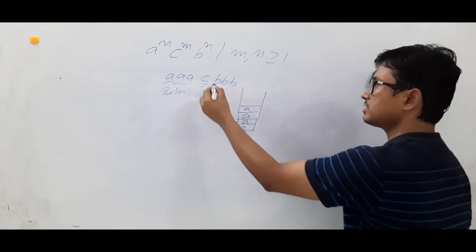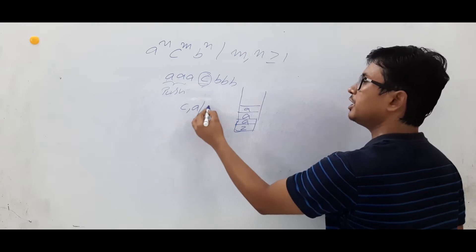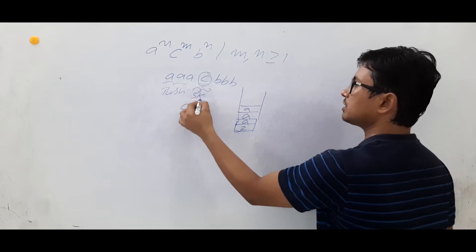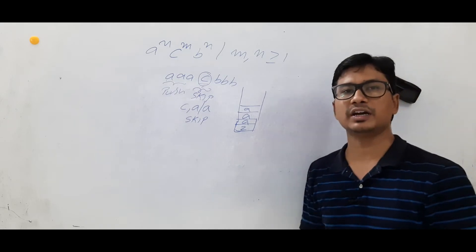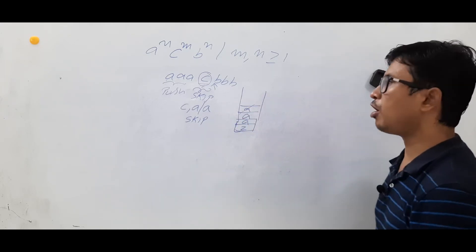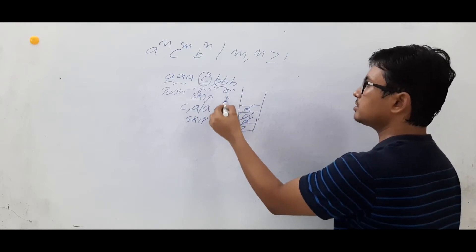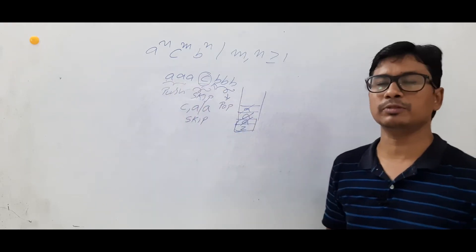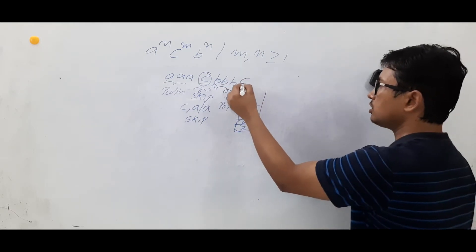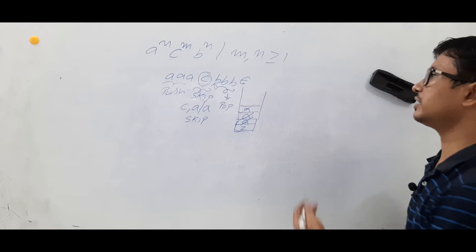If I see input symbol 'c' and stack symbol is 'a', I keep it as 'a' — meaning I perform the skip operation. So for any number of c's, I don't modify the stack content. Then if I see 'b' with stack symbol 'a', I perform the pop operation. At last, if I see epsilon and the bottom symbol Z is there, I accept and go to the final state.